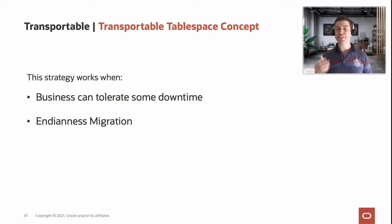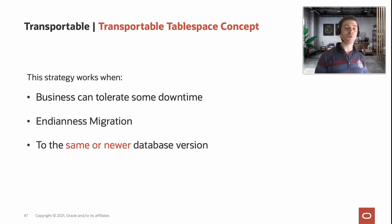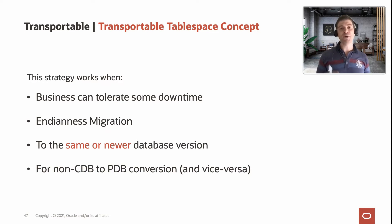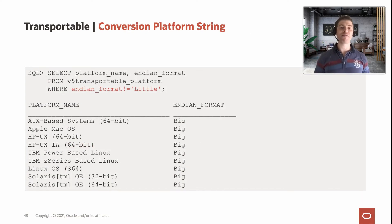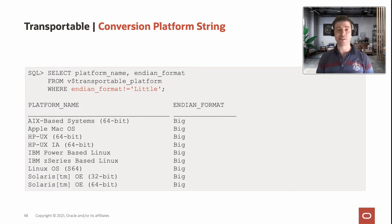The good thing about this method is you can do endian migration — from big-endian to little-endian or even the opposite — and you can also go to a newer database version, for example from 11g non-CDB to 19c pluggable database. It also supports non-CDB to PDB conversion. Here are some examples of platforms that run in big-endian: you could use this method to move from AIX to Linux on Exadata, or from Solaris to Linux.